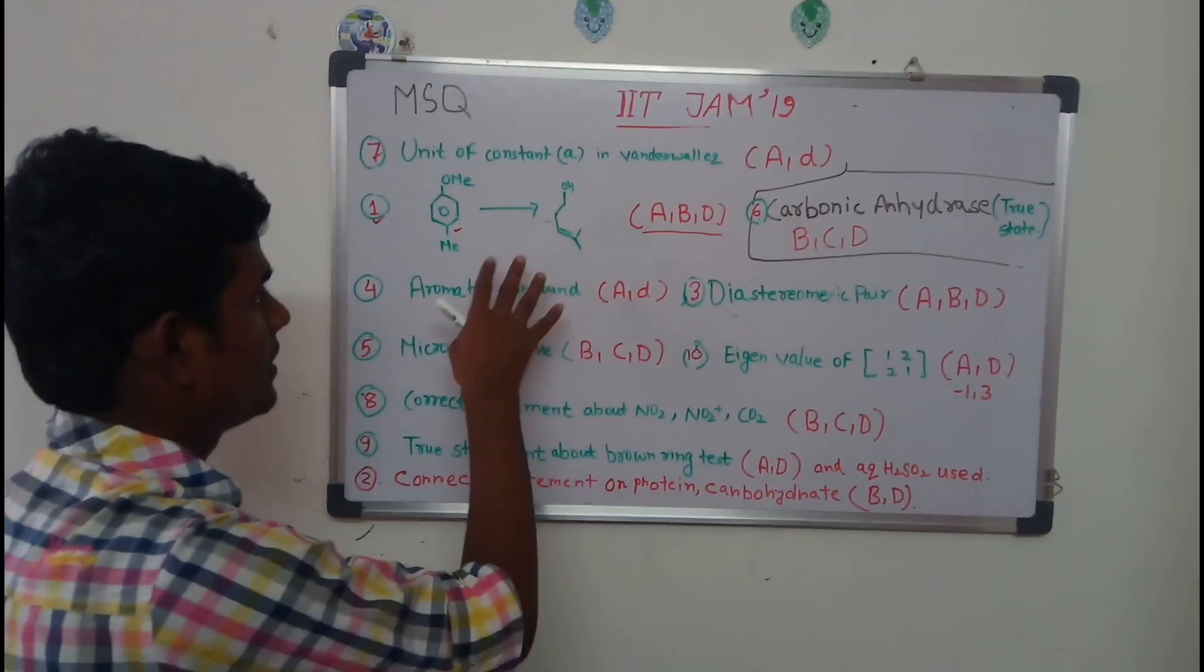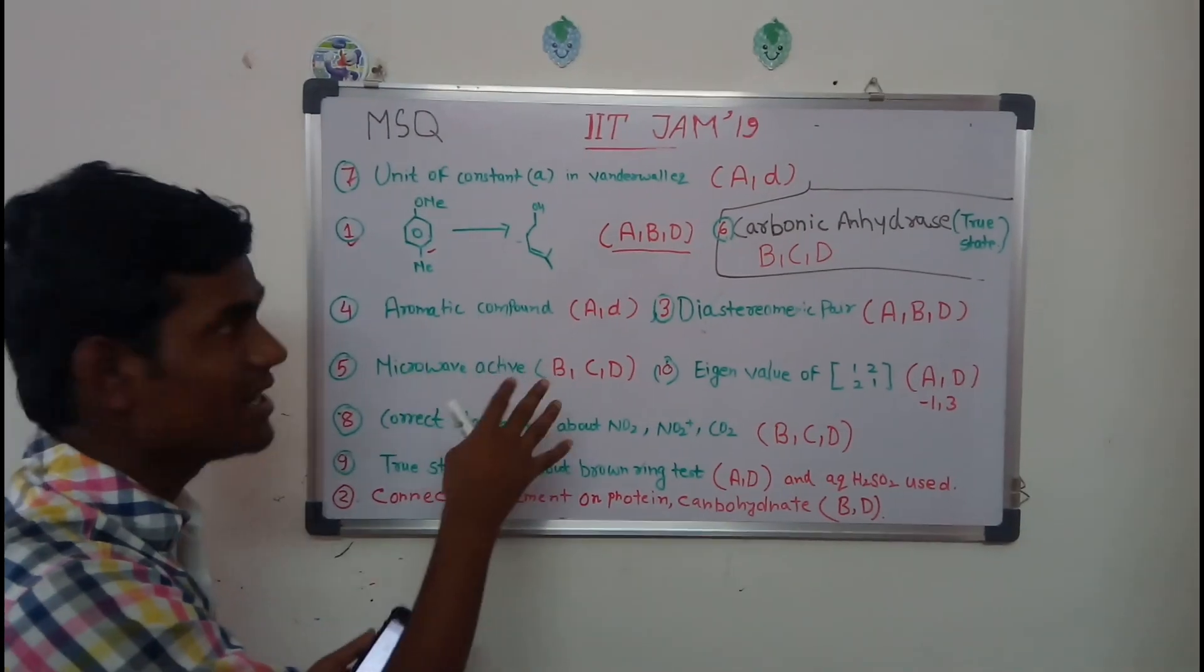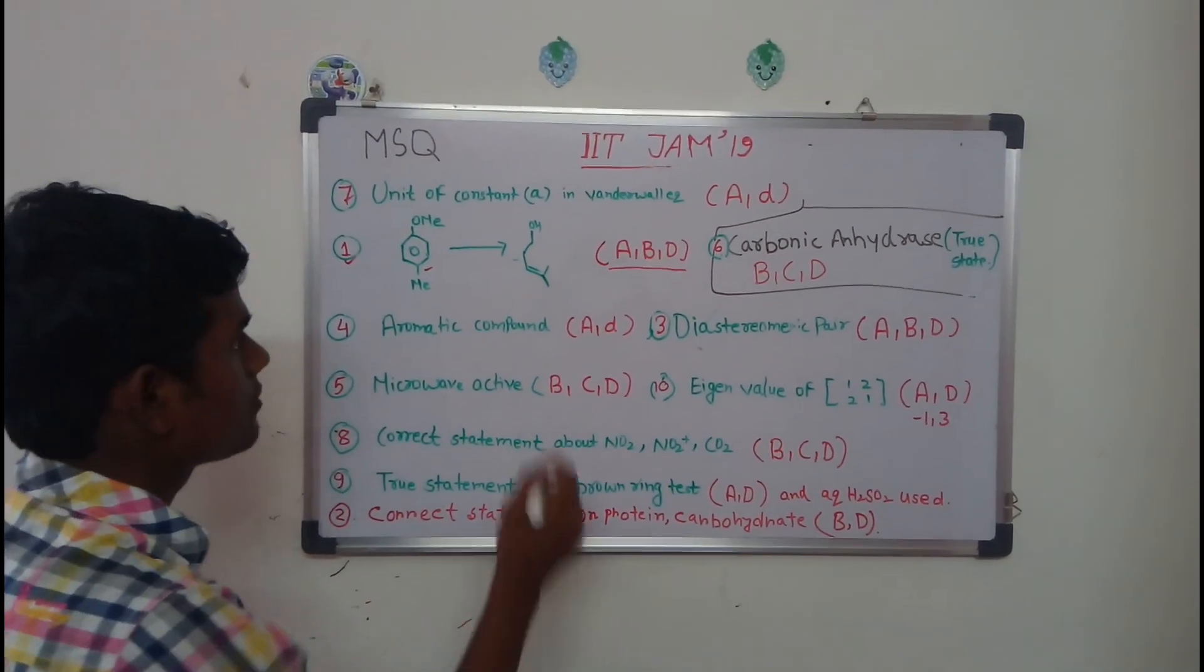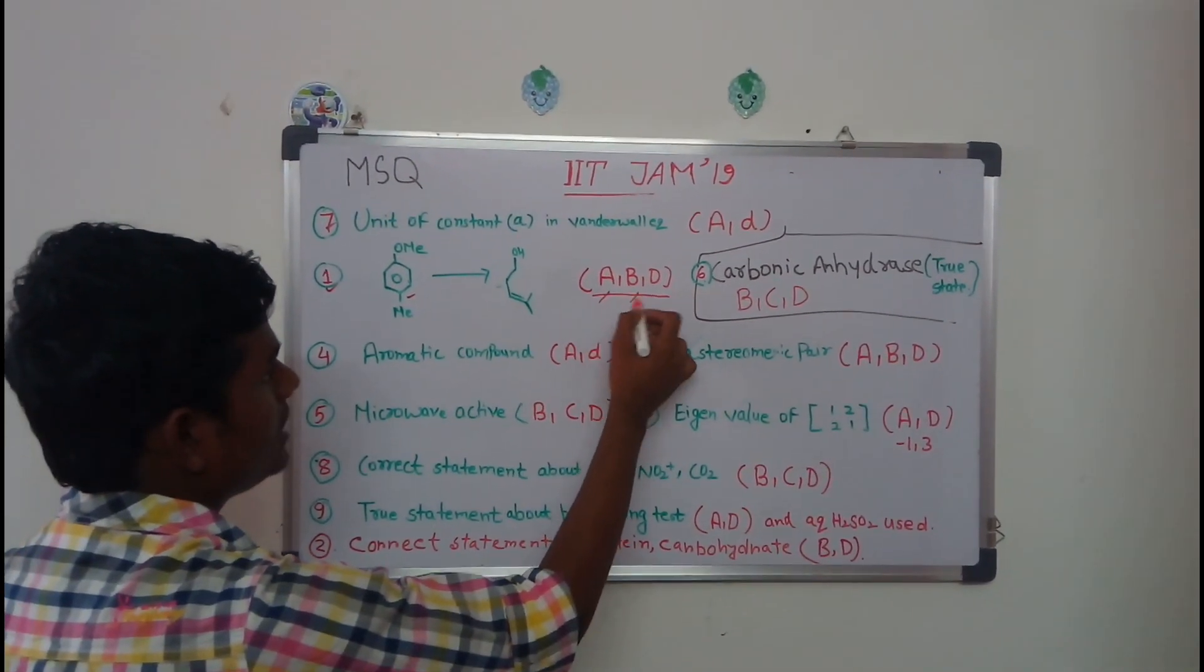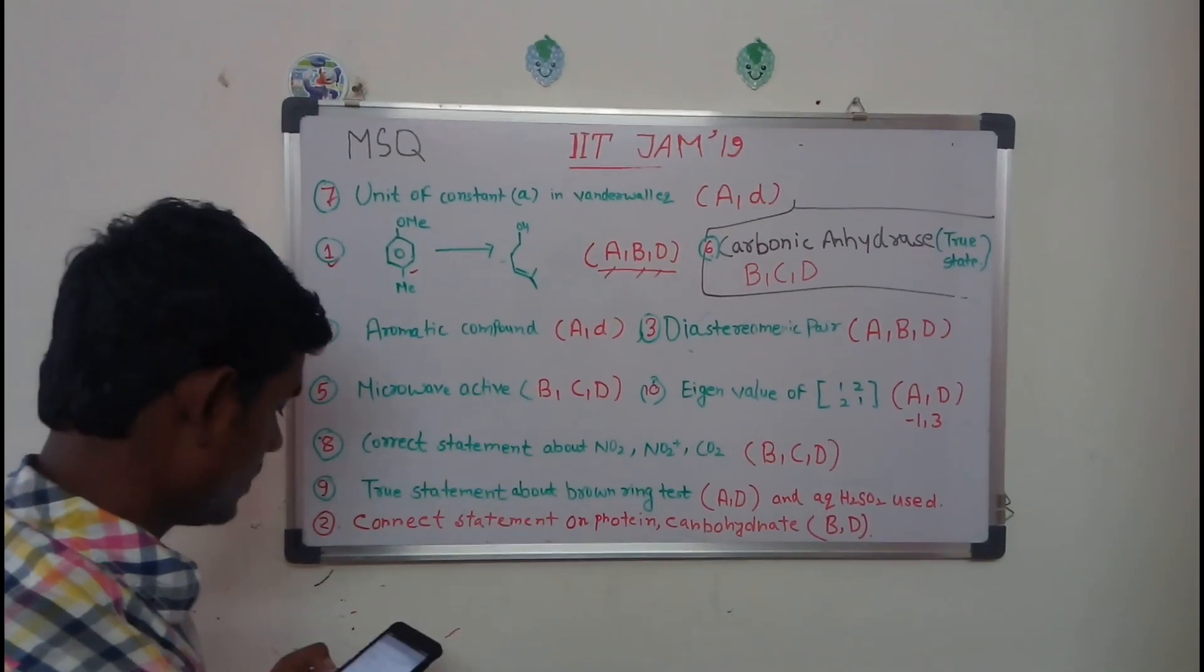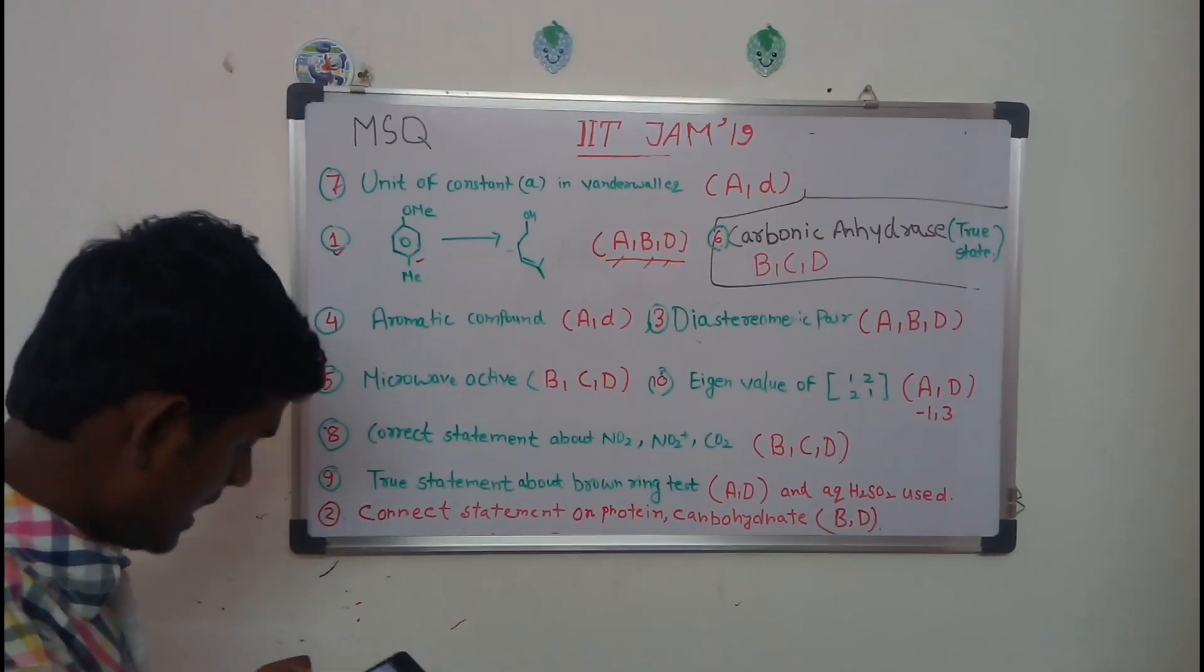And some kind of specific reduction, then tosylation followed by hydrogenolysis. The correct options for these are A, B, D - these three options are correct. Let's take the second question. In that second question, they have given four sentences and asked which are the correct options.